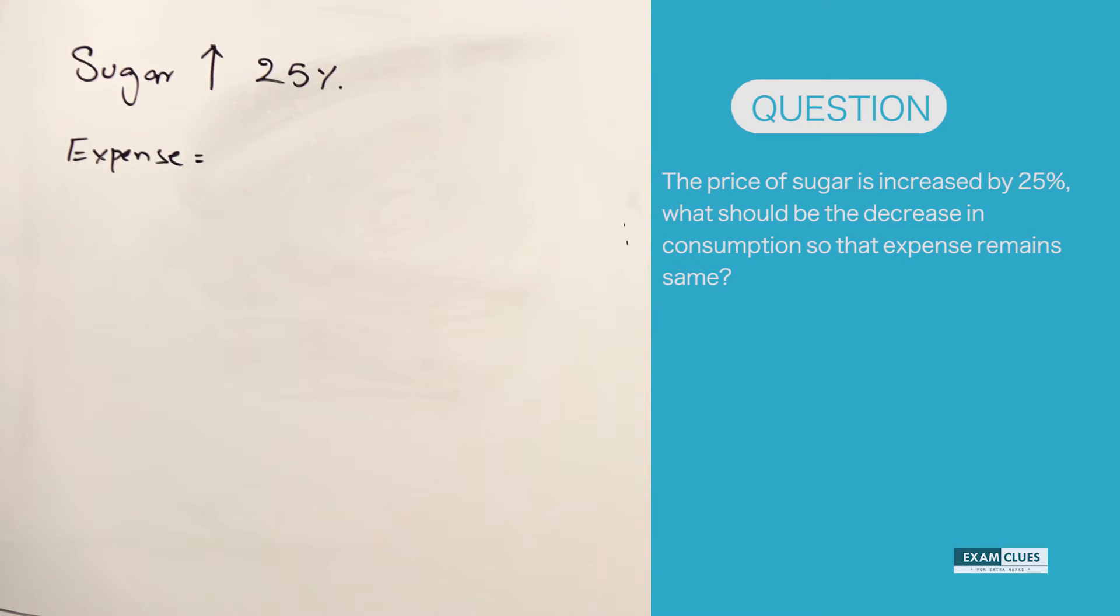As I mentioned, the kilos - how many kilos we buy, let's say N kilos - and previous price, let's say P. So my expense earlier was N kilos into P.